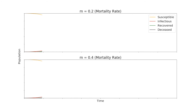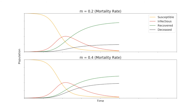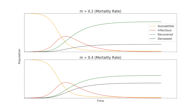These two models are the same, except in the second graph the mortality rate is doubled. Since nothing else is different, the susceptible and infectious lines are the same for both, because those compartments are not dependent on the mortality rate. This means that in both models the same amount will be removed, meaning they will move either to the recovered or deceased compartment. If the mortality rate is higher, more will be deceased, so the second model will have more deceased and less recovered than the first model.